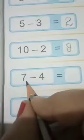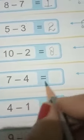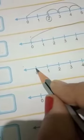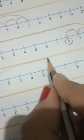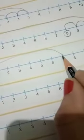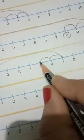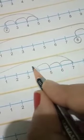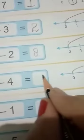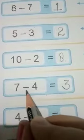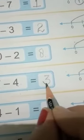Next, 7 minus 4. From 0 to 7. 4 steps back. 1, 2, 3, 4. Your answer is 3. Write down 3 in the box. 7 minus 4 is equal to 3.